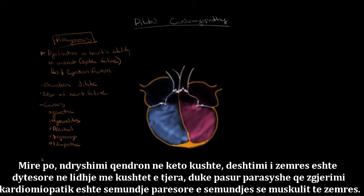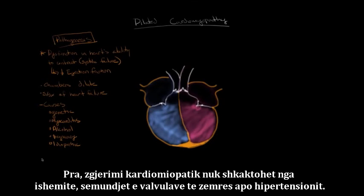It's important to note this because these diseases can cause heart failure with a similar presentation to dilated cardiomyopathy, in that the heart dilates and results in systolic failure. But the difference is that in those conditions, heart failure is secondary to the other condition, whereas in dilated cardiomyopathy it's a primary disease of the heart muscle itself. So dilated cardiomyopathy is not caused by ischemia, valvular heart disease, or hypertension.